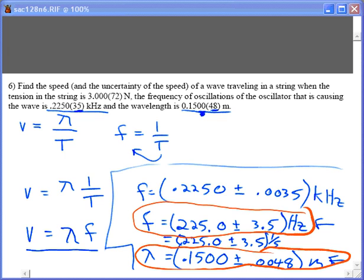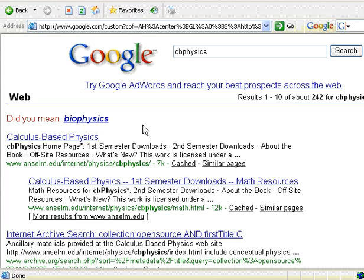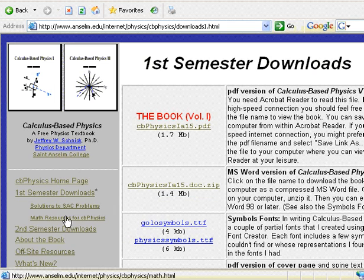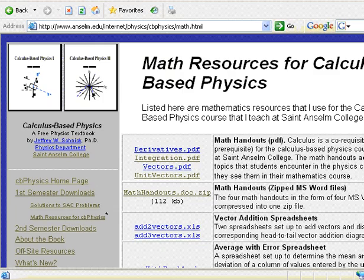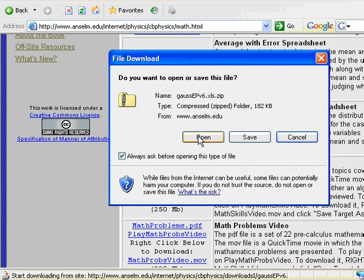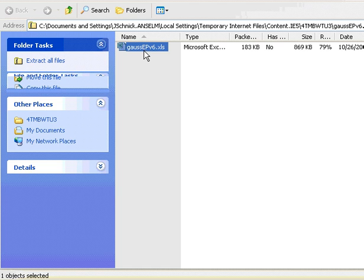So let's see if we can find Gaussi P there. Open up the browser, type in CB Physics, first item, first semester downloads, math resources, scroll down a little bit, Gaussi P, open.